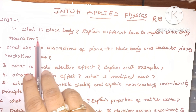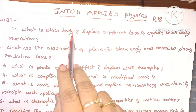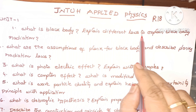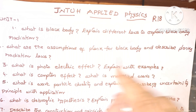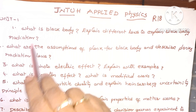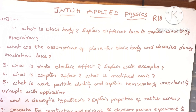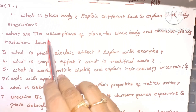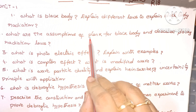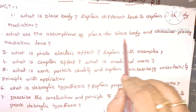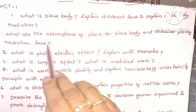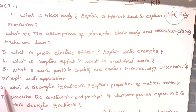Unit 1 questions: First, what is a black body? Explain different laws to explain black body radiation. Second question is what are the assumptions of Planck for black body and describe Planck's radiation law.